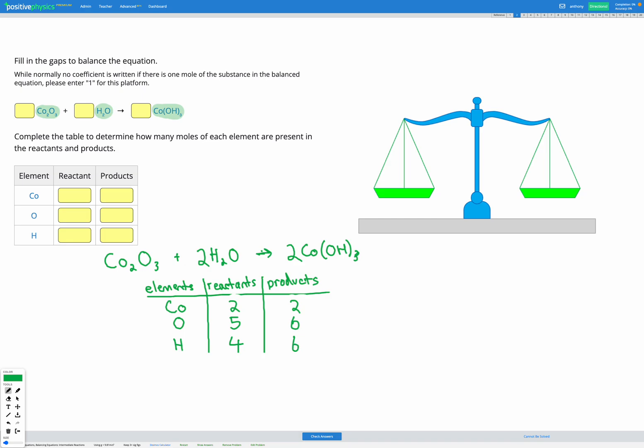But we still have too little O and too little H in our reactants on the left. So I'm going to add one more. I'm going to change that from a two to a three. And I'm going to go ahead and count again to see how we're doing.